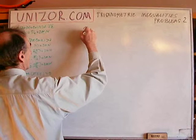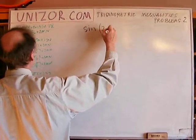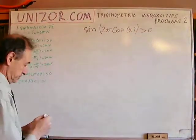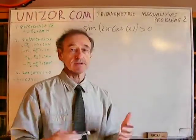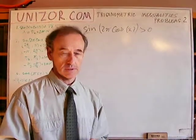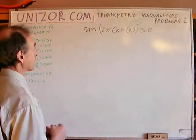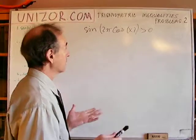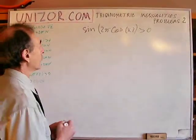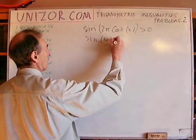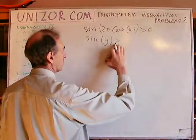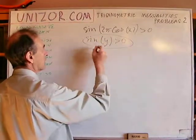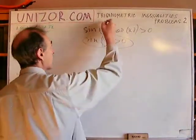Second one: sine of 2π·cosine(x) greater than 0. Well, this is kind of a complicated thing, so you cannot really immediately come up with the solution, even graphically. I never actually attempted to draw a graph of a function like this one. However, we do know how to solve this particular inequality.